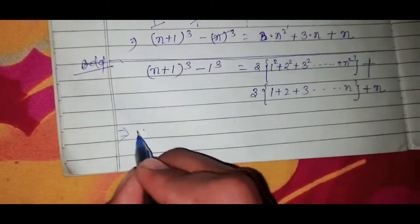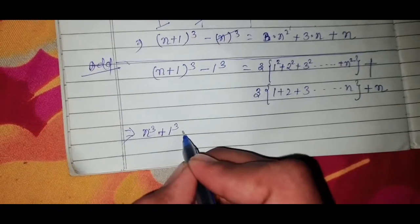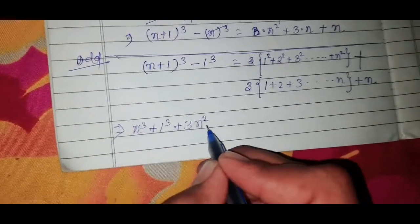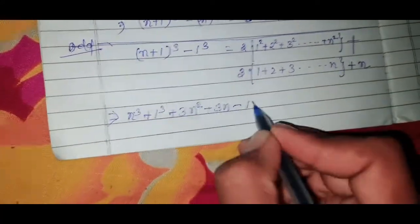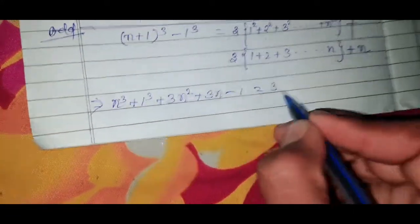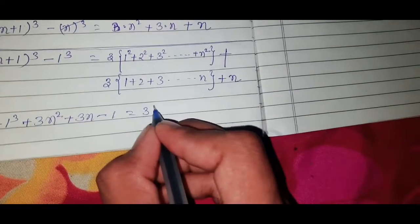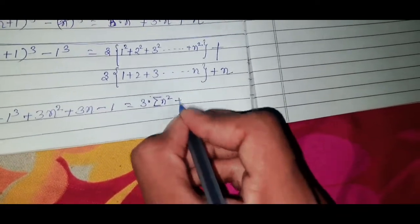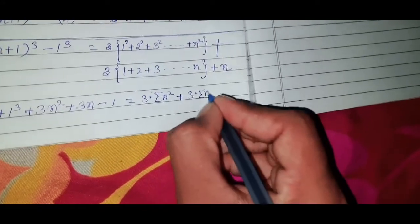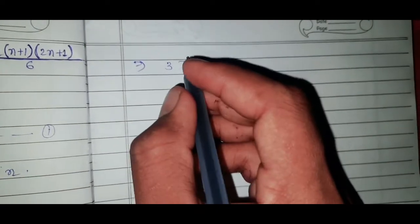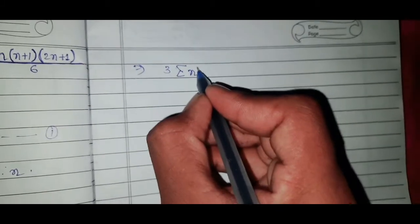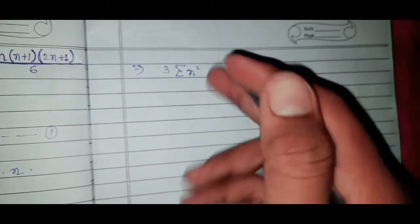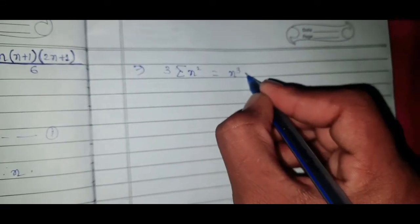So (n+1)³ = n³ + 1 + 3n. Directly writing: 3n² + 3n. We can write this using sigma notation as 3·Σn² + 3·Σn + n. Moving terms to the right-hand side and left-hand side: right-hand side has 3·Σn².